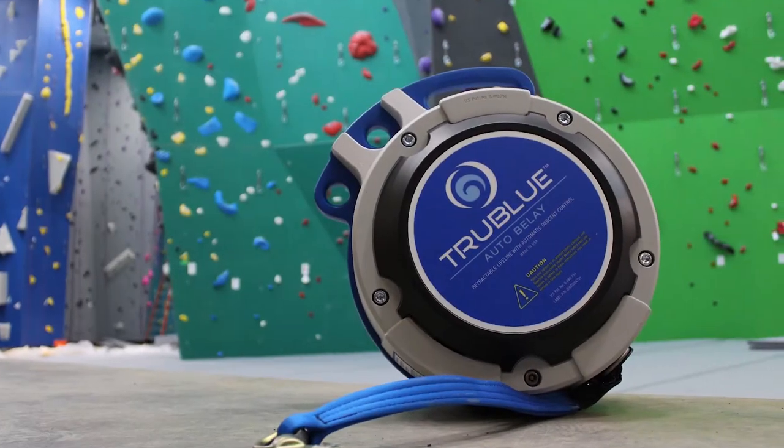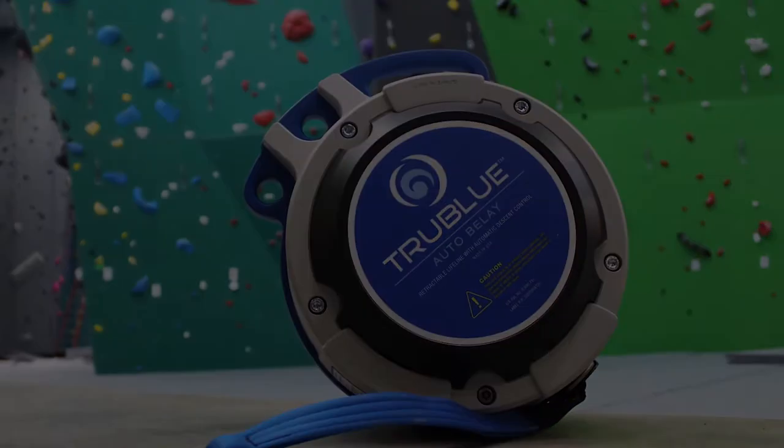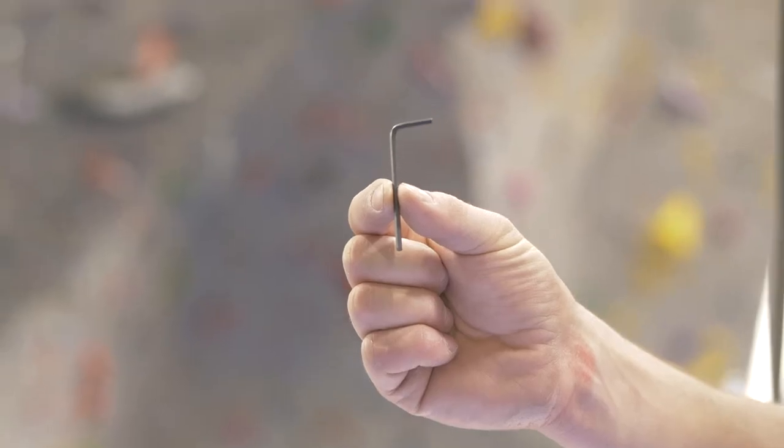In this video we'll show you the quick and easy way to change webbing on your True Blue without even having to take it off the wall. First, grab your webbing replacement kit, take out the allen key, the shackle pin, and the replacement webbing.